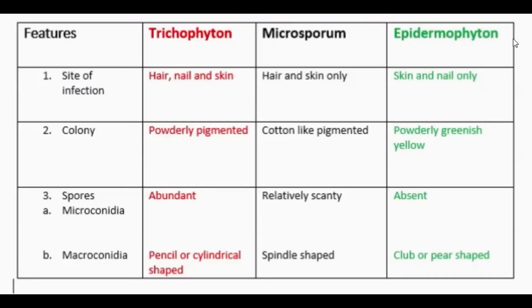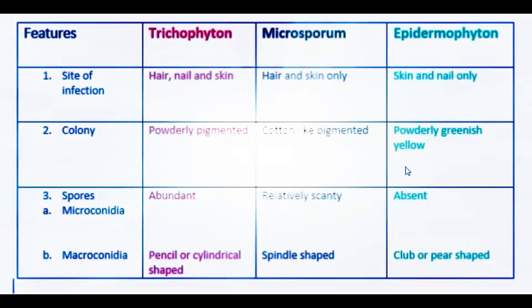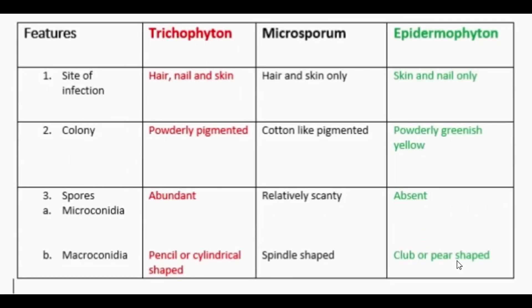Now about Epidermophyton: it affects skin and nail only. The colony is powdery, greenish-yellow. Microconidia are absent, and macroconidia are club or beaver-tail shaped.